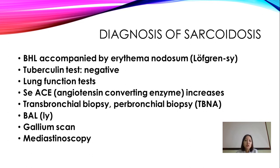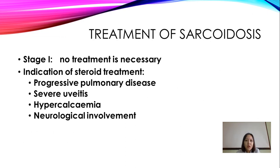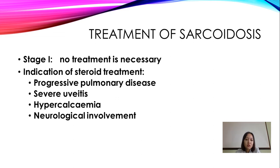Diagnosis of sarcoidosis: it may be accompanied by erythema nodosum; tuberculin test must be negative. Investigations include lung function tests, ACE level, transbronchial biopsy, bronchoalveolar lavage, calcium scan, and mediastinoscopy. For treatment, at stage 1 no treatment is necessary. Steroid treatment is indicated only with progressive pulmonary disease, severe eye involvement, hypercalcemia, or neurological involvement.